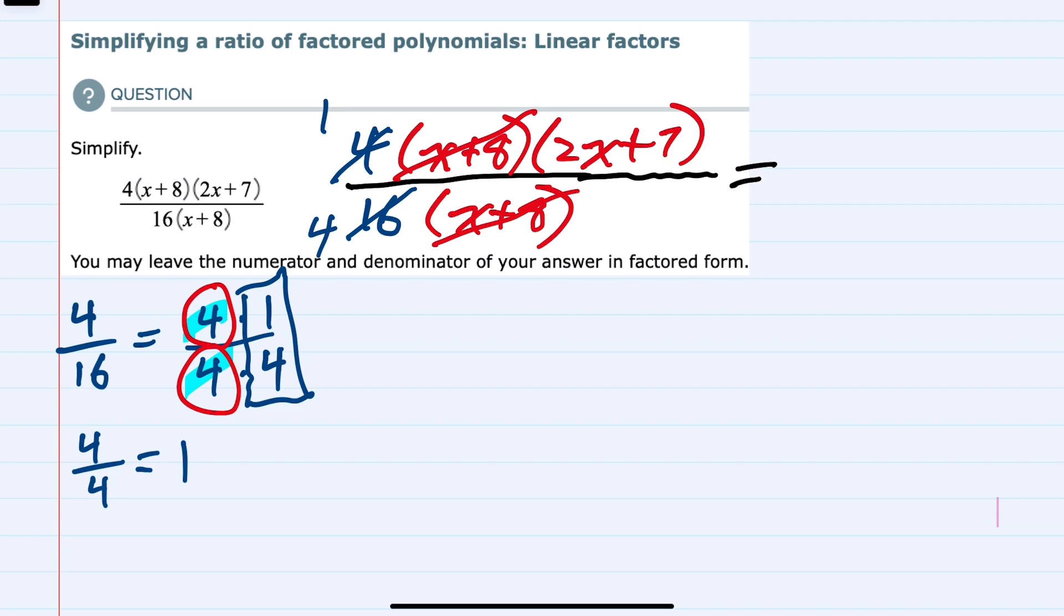1 times 2x plus 7, which can be left as just 2x plus 7. And then in the denominator, we still have our 4.